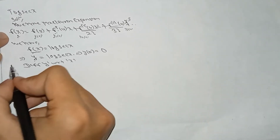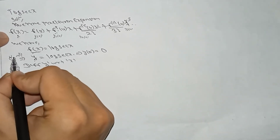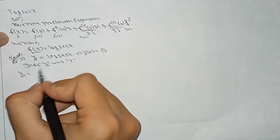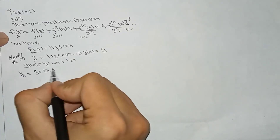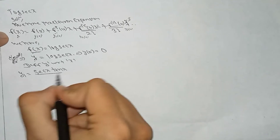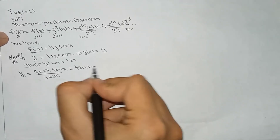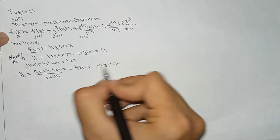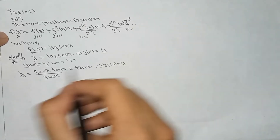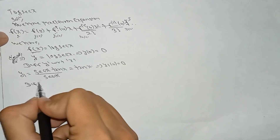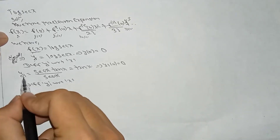Differentiating y with respect to x gives y1. So y1 = sec(x)·tan(x) / sec(x), and sec(x) cancels, leaving y1 = tan(x). Therefore y1(0) = tan(0) = 0.